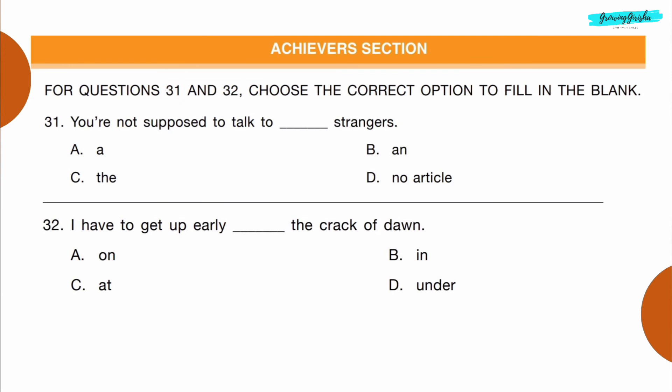Achievers Section: For questions 31 and 32, choose the correct option to fill in the blank. Question 31: You're not supposed to talk to dash strangers. Option D: no article. Question 32: I have to get up early dash the crack of dawn. Option C: at.